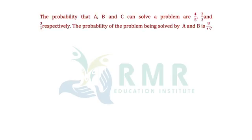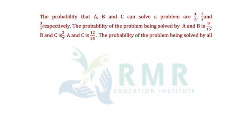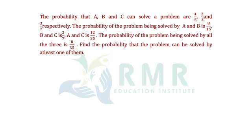The probability that A, B, and C can solve a problem are 4/5, 2/3, and 3/7 respectively. The probability of the problem being solved by A and B is 8/15, B and C is 2/7, and A and C is 12/35. The probability of the problem being solved by all three is 8/35. Find the probability that the problem can be solved by at least one of them.